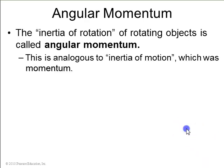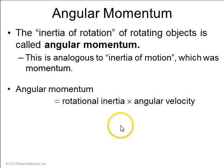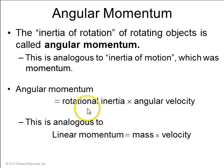Angular momentum is analogous to linear momentum. Let's see, it's an inertia of motion. And we had linear momentum was mass times velocity. Well, angular momentum is rotational inertia, that I, times the angular velocity. It's an analogous equation.